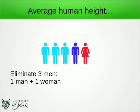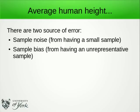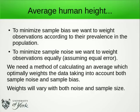What's going on? We have two competing sources of error: sample noise from having a small sample, and sample bias from having a sample that is unrepresentative of the population as a whole. To minimise sample bias, we want to weight observations according to their prevalence in the population. To minimise sample noise, we want to weight the observations equally so that we don't inflate the effect of any outlier. These two requirements are in conflict, so we need a method of calculating an average which optimally weights the data, taking into account both sample noise and sample bias.